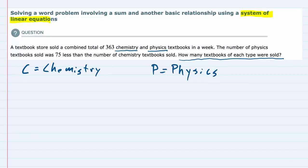When I reread the rest of this problem I'm looking for those two equations that I should be able to get out of the descriptions that are given. Starting with that first sentence, textbook store sold a combined total of 363 chemistry and physics textbooks in a week. From that I can get that the number of chemistry textbooks plus the number of physics textbooks equals 363. So that's what we mean by the combined total. The total chemistry books plus physics books equals 363. So we have our first equation.